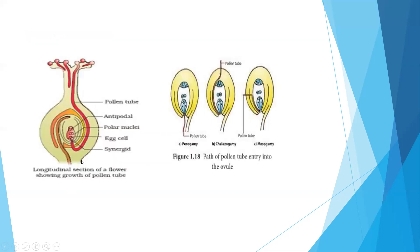Here you can see the diagram of the gynoecium — this is the style, this is the ovary, and this is the stigma. The pollen grains land on the stigma of the flower and germinate. When the pollen grain is shed from the anther it has two cells: the smaller generative cell and the larger vegetative cell. The generative cell eventually forms the two male gametes.